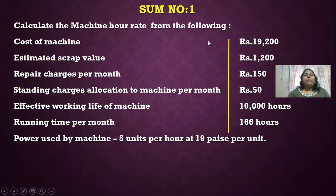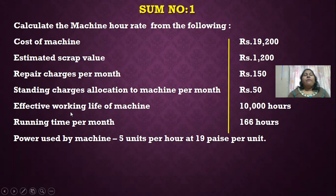Let's check one more problem. Calculate the machine rate from the following data: cost of the machine is 19,200 rupees, estimated scrap value is 1,200 rupees — these two figures will be used to calculate depreciation — and the estimated effective working life of the machine is 10,000 hours.